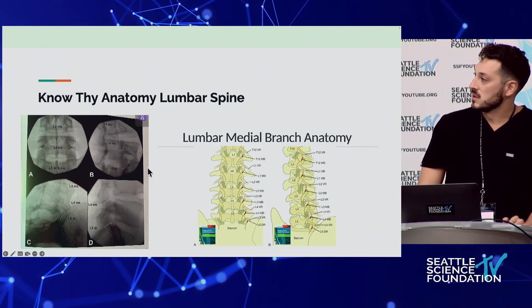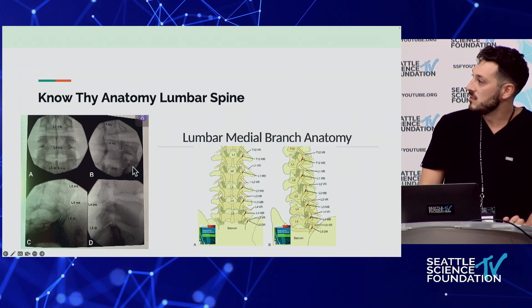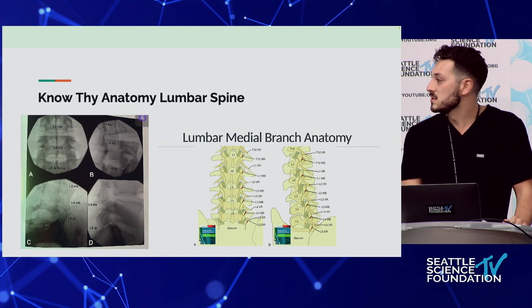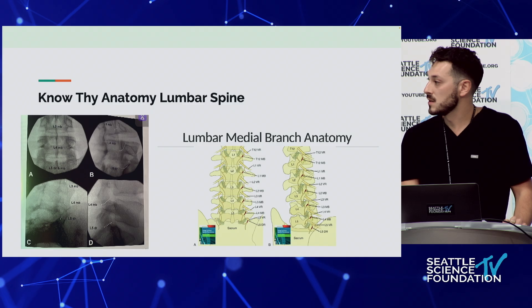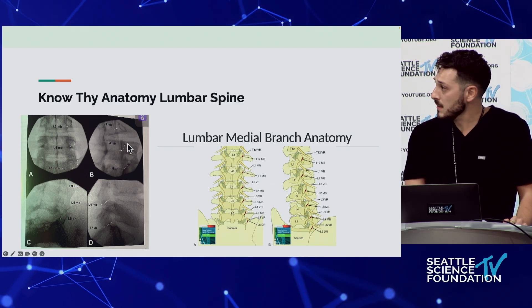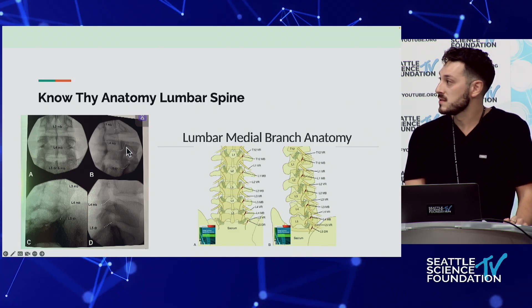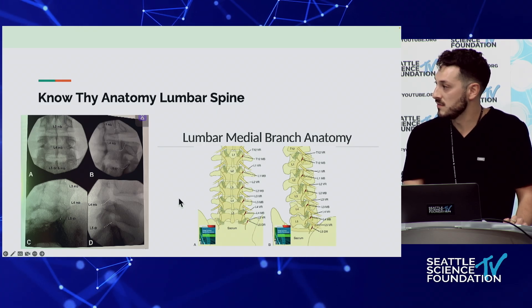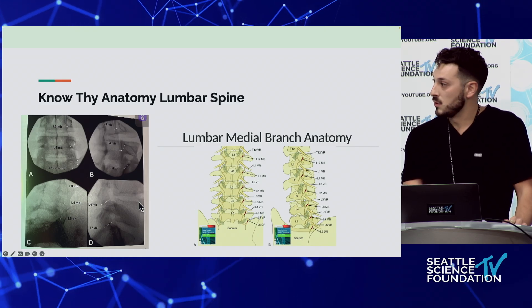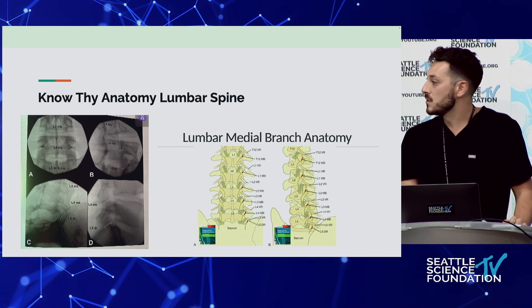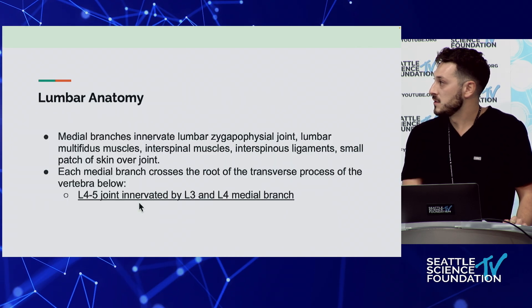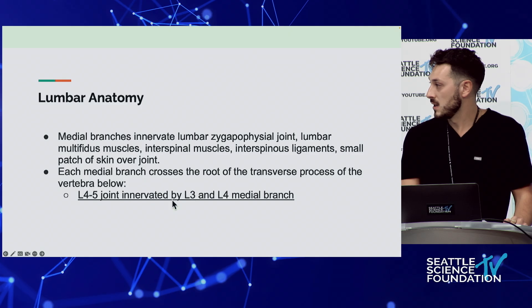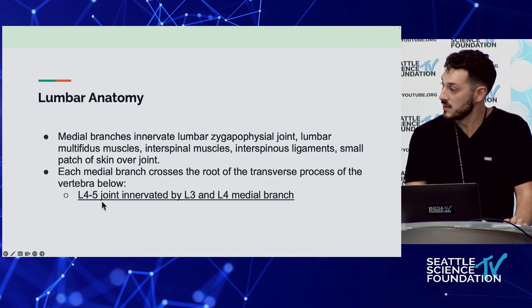For the lumbar spine, the medial branches are oriented a little bit differently - it's the level at and level above that innervates the joint. For L5-S1 and L4-L5, which are your most commonly treated levels, it's the L3, L4, and L5 primary dorsal ramus where you're going to be going. They lie inferior to the superior articular process. This should be bread and butter - you just have to understand where these nerves live and get comfortable orienting your fluoroscopy to get parallel placement of your RF probe.